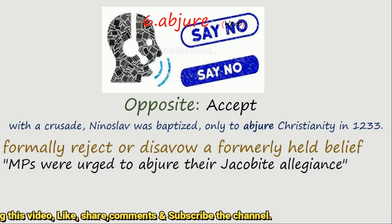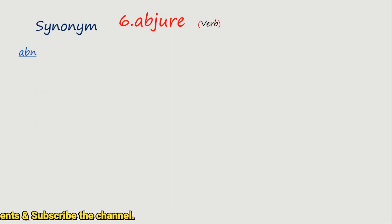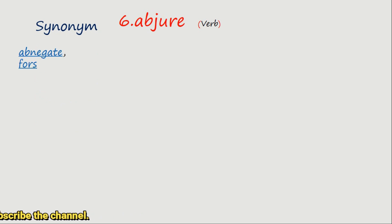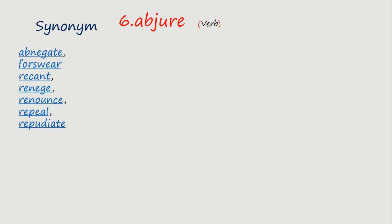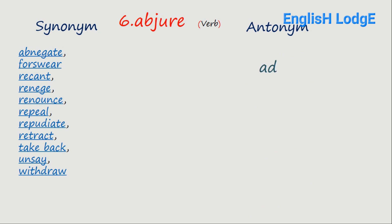Let's try to find out some synonyms of the word abjure: abnegate, forswear, recant, renounce, repel, repudiate, retract, take back, unsay. And the antonym here is: adhere to.